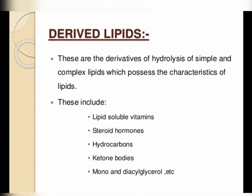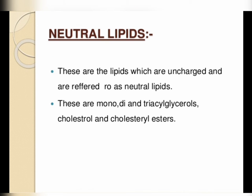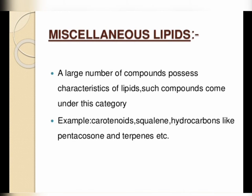Derived lipids are derivatives obtained from the hydrolysis of simple and complex lipids which possess the characteristics of lipids. Derived lipids include lipid-soluble vitamins, steroids, hormones, hydrocarbons, ketone bodies, mono- and diacylglycerols, and cholesterol. Neutral lipids are uncharged lipids — mono-, di-, and triglycerides, cholesterol, and cholesterol esters. Miscellaneous lipids include compounds such as carotenoids, squalene, and hydrocarbons like pentacosane and terpenes.